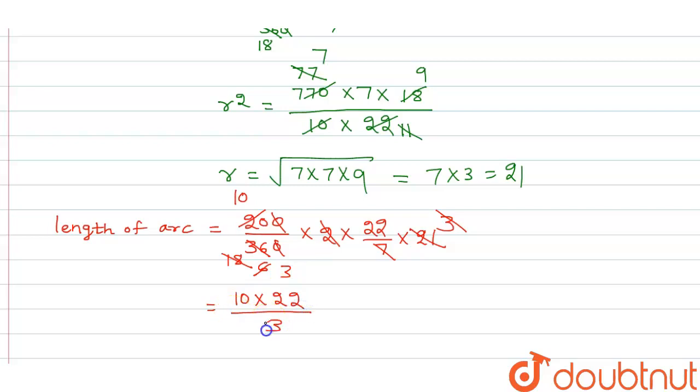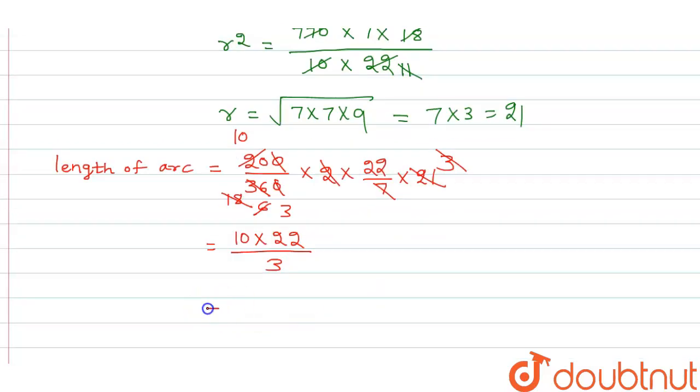Now what we write is 220 upon 3 centimeter. Now the length of the arc is 220 upon 3 centimeter.